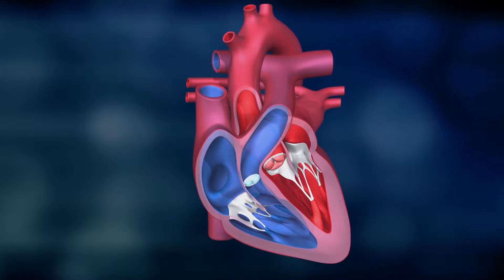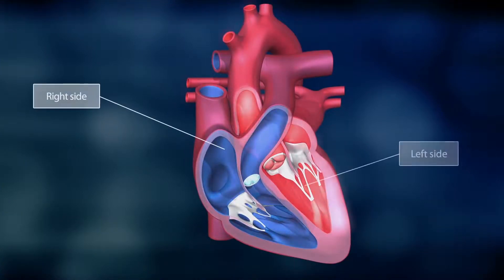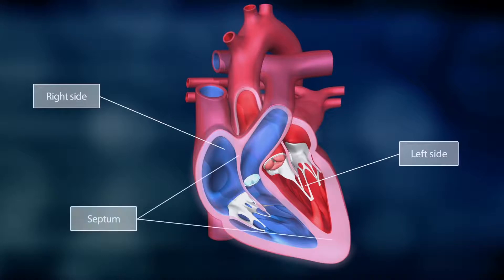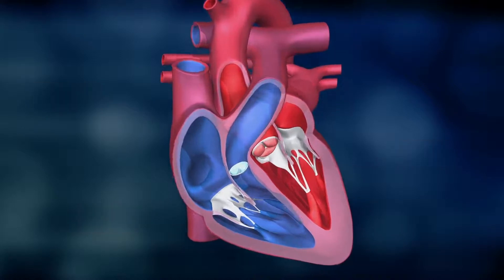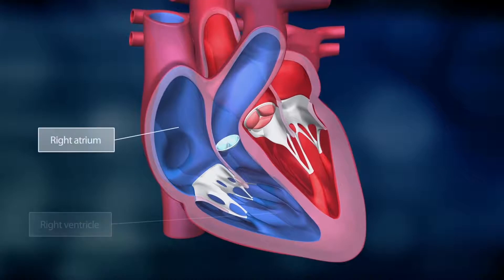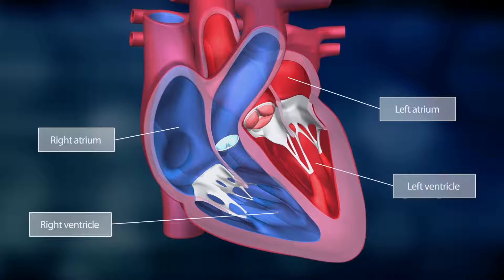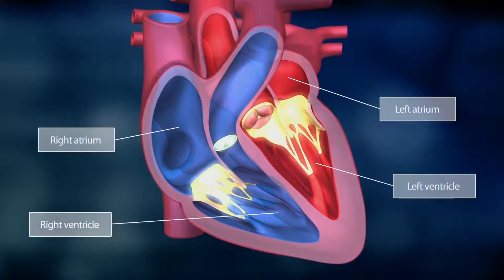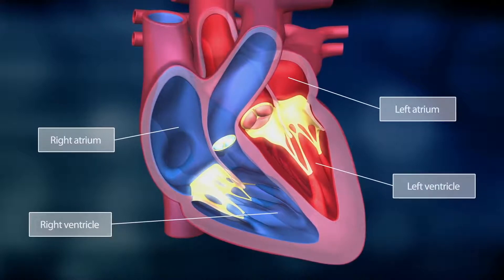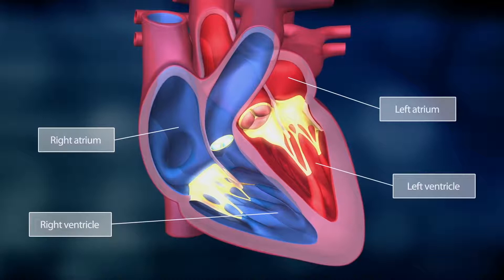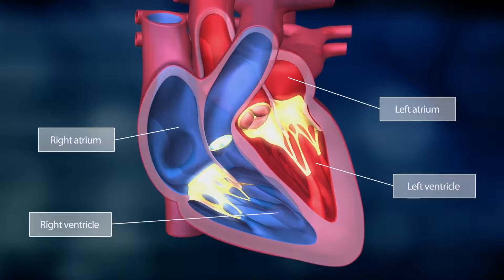The heart is divided into a right and a left side. The two sides are separated by the septum. The heart has four chambers: the right atrium with the right ventricle and the left atrium with the left ventricle. Four valves regulate the flow of blood through the heart, its chambers and into the circulation.